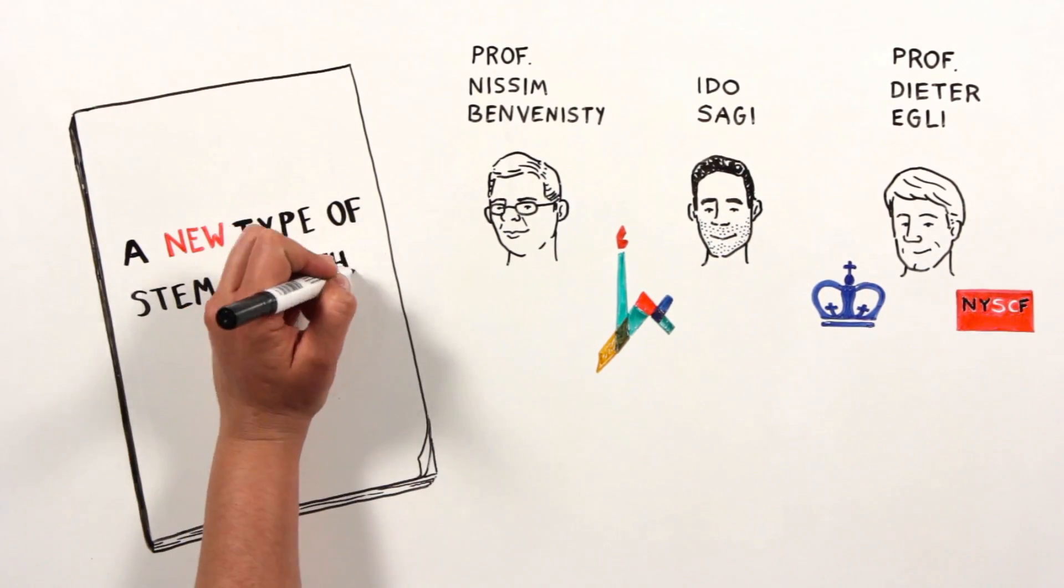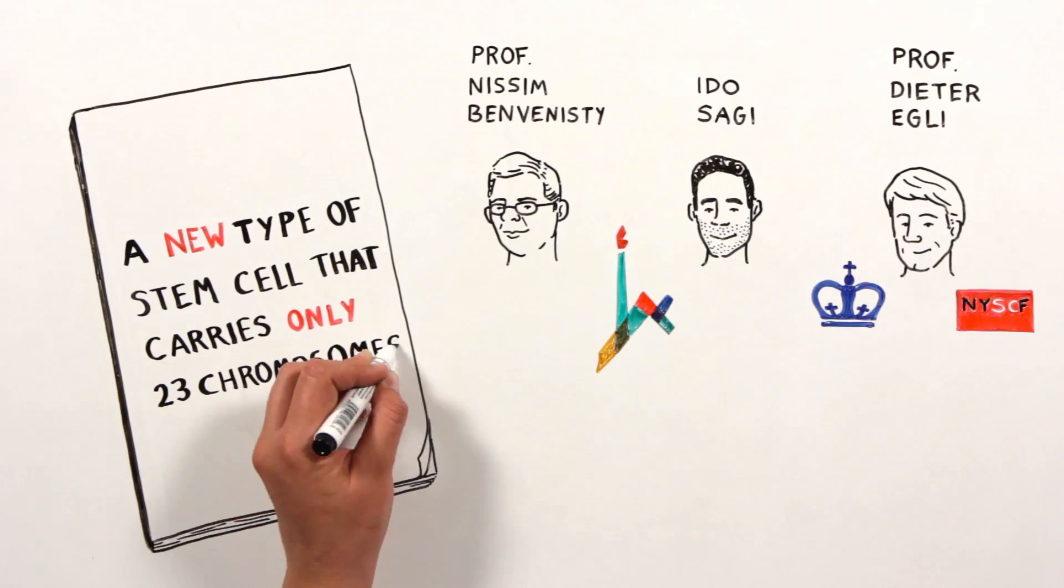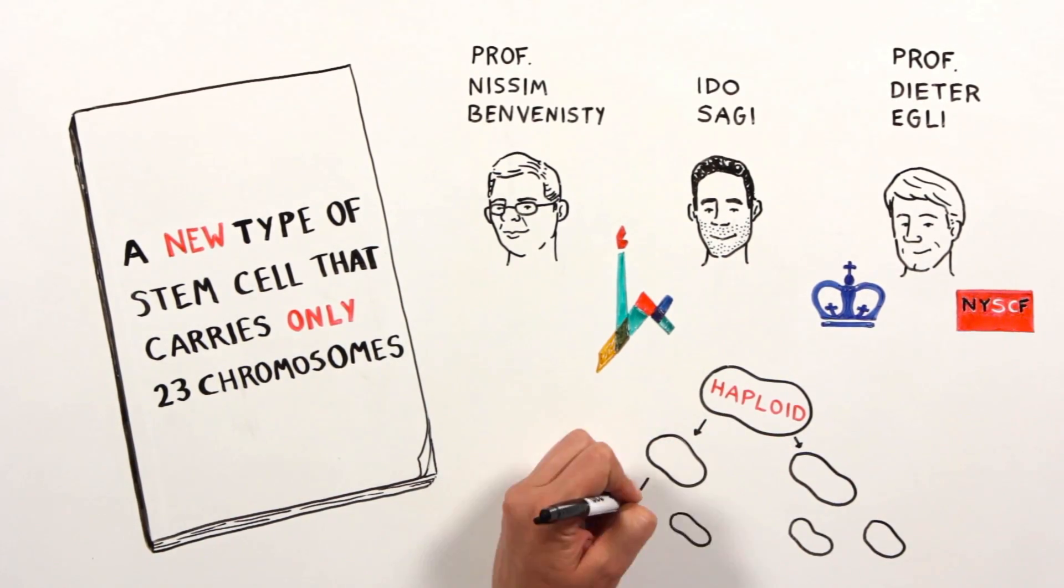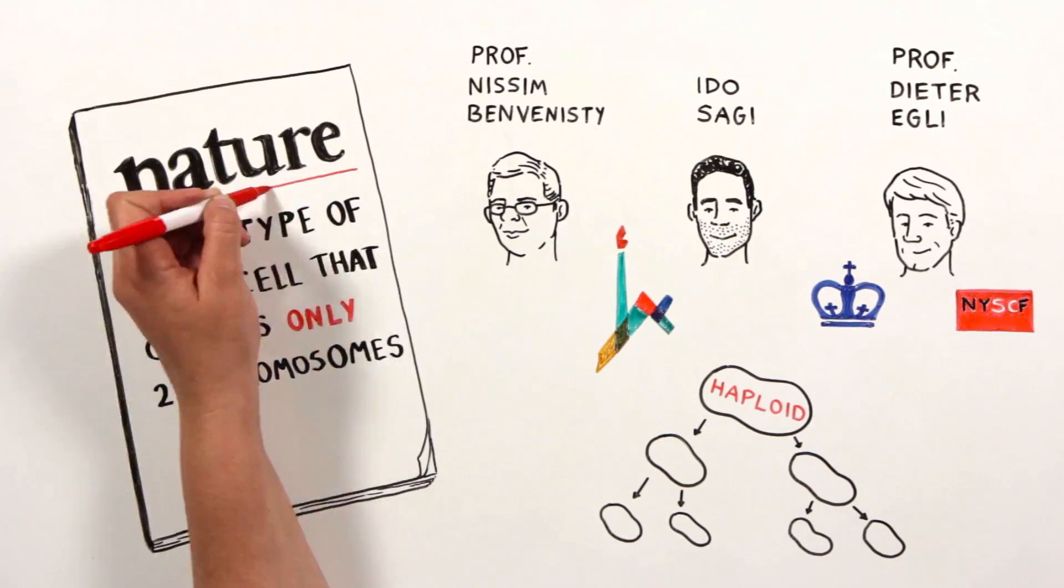The discovery of human cells capable of cell division with just one copy of their genome was reported in the prestigious journal Nature.